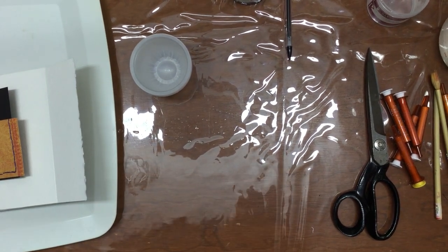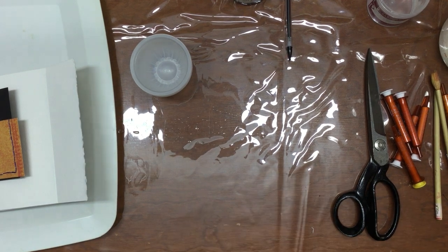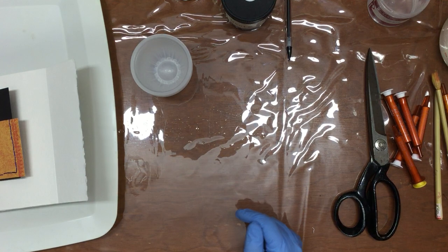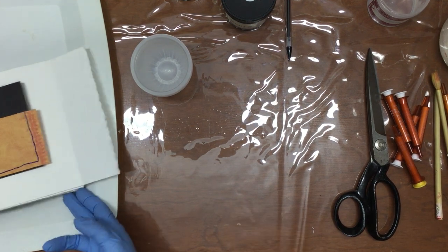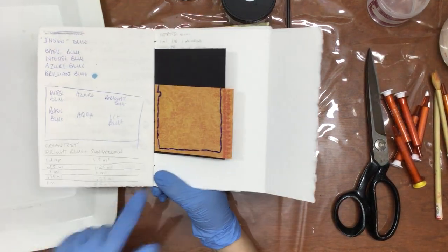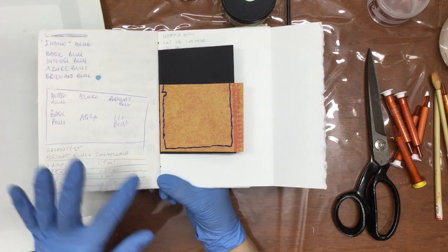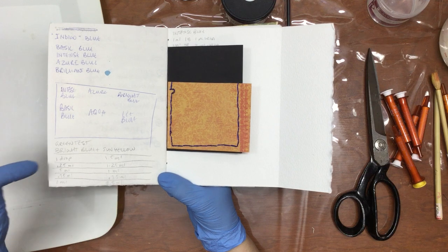So here we are, I'm about to do some color mixing. I have a bright blue and a sun yellow, and I want to see what color green they make. I have marked down the blends that I'm going to do because it's really important to keep notes about what you've done.